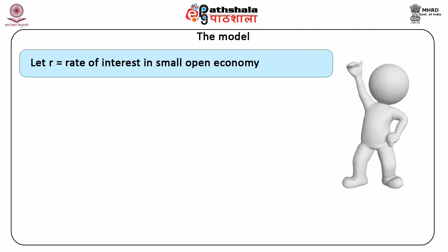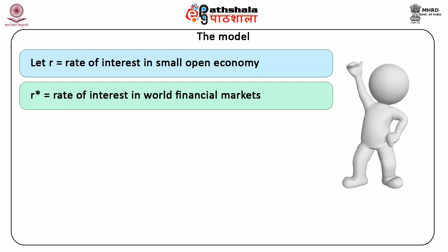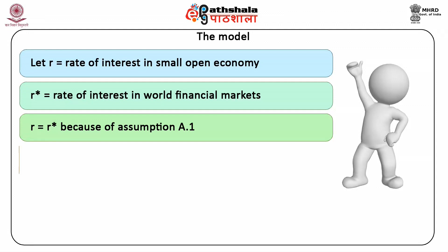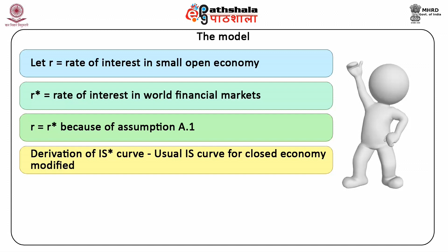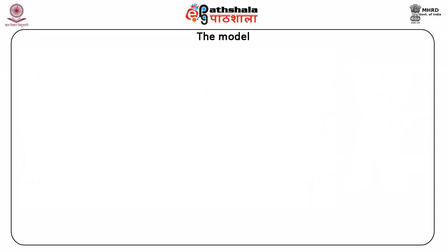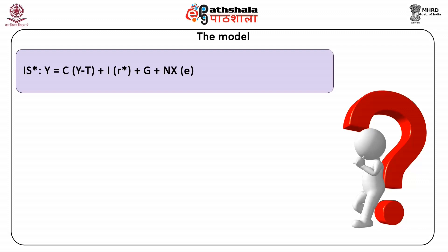Let R be the rate of interest in our small open economy and R star be the rate of interest in the world financial markets. Then R equals R star because of assumption 1. Derivation of IS star curve: The usual IS curve for a closed economy is modified into the IS star curve for the open economy by adding net exports and R star. That is, IS star: Y equals C(Y minus T) plus I(R star) plus G plus NX(e).